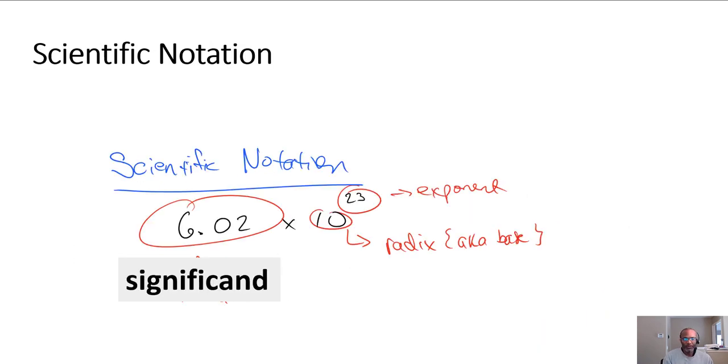A few things here for review. Scientific notation has these elements where there's the significand and we also have the radix. So in base 10, it would be 10 and had that been base 2, it would be a 2 to some exponent value. So it all depends on which base we're looking at, but scientific notation will have a significand and exponent and a radix.